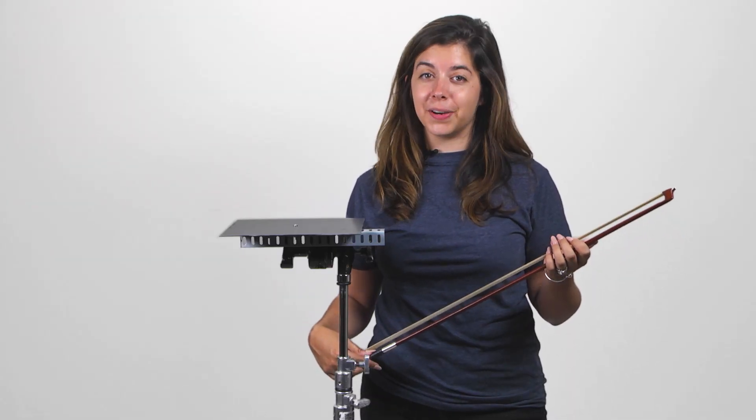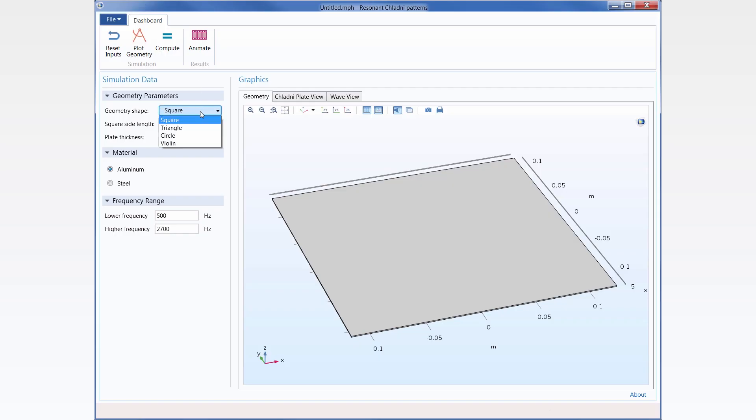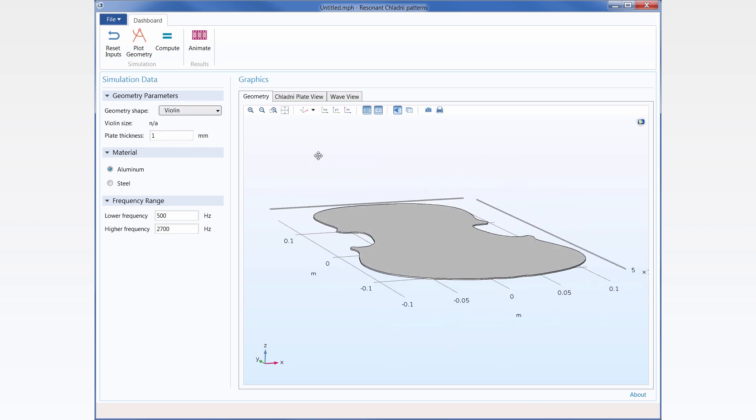How does it work? Let's find out with the help of a simulation app. Chladni plates come in different shapes like squares, triangles, circles, and even violin and guitar bodies.